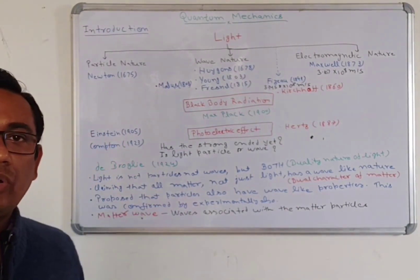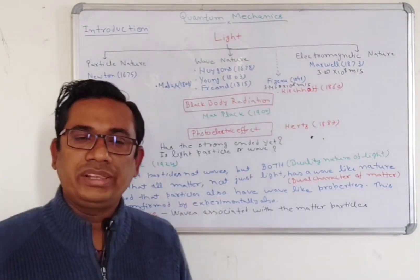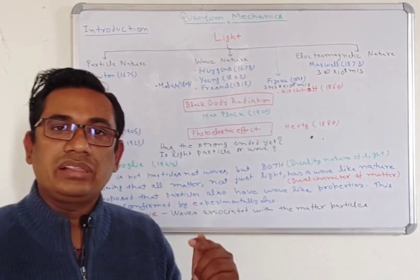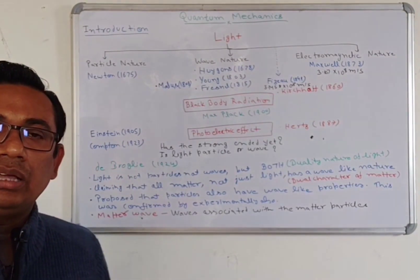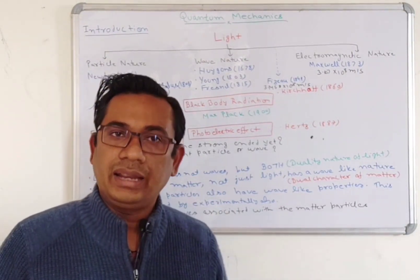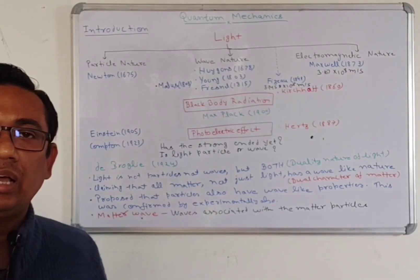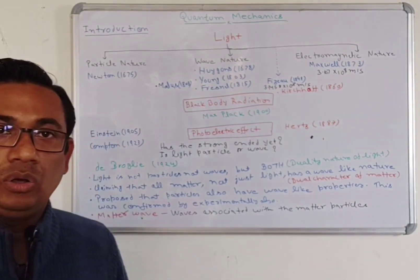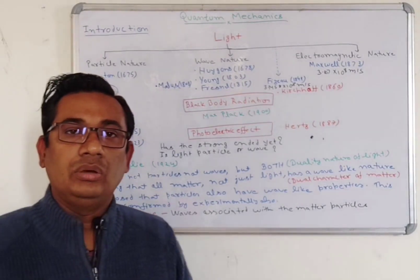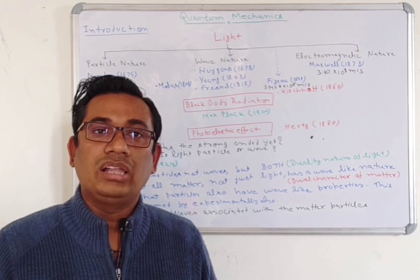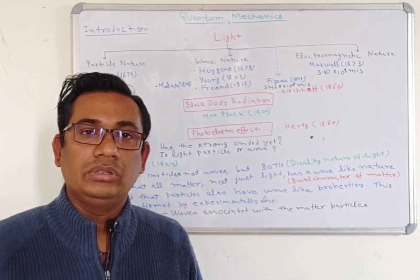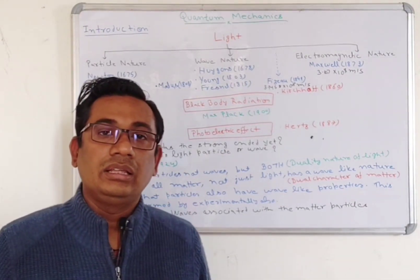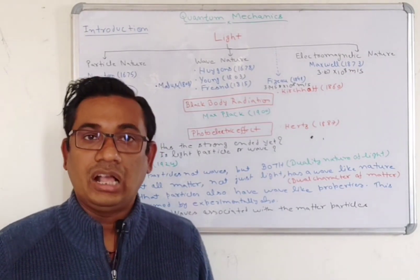But there are a few drawbacks of the corpuscular theory. First, according to the corpuscular theory, light traveling in a denser medium has a greater velocity compared to a rarer medium. And second, according to the corpuscular theory, the velocity of light depends on temperature. Both statements were experimentally not true. And Newton could not explain the phenomena of interference and diffraction.